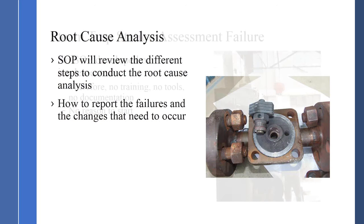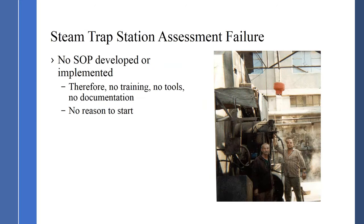Root cause analysis is part of the SOP — taking the steam trap apart, visually inspecting it after detecting a failure mode, and documenting the failure and correction method. Not only what failure occurred, but what changes need to occur to prevent further failures at that steam trap station. Root cause analysis must be done with each steam trap in failure mode to understand what caused the failure and institute changes to prevent further failures. One of the most common assessment failures is no SOP being developed or implemented — therefore no training, no tools, no documentation — and if you don't have those, there's no reason to start.